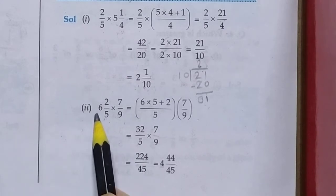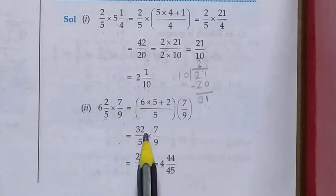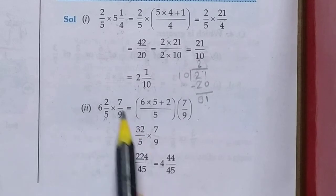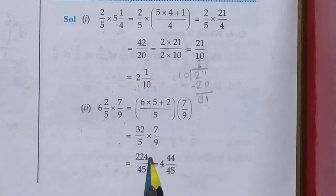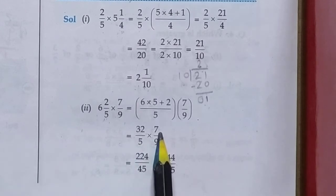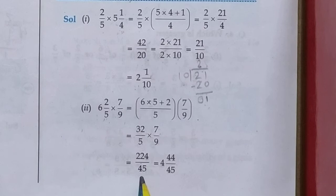Now 35 multiply 7: 32 multiply 7 is 224, and 5 times 9 is 45. Now it is an improper fraction, and it is in lowest term. So if you divide 224 by 45, you will get the answer 4 whole 44 upon 45.